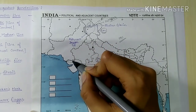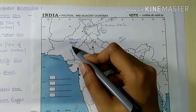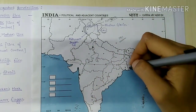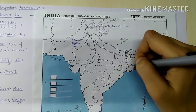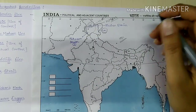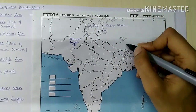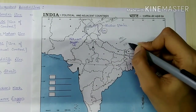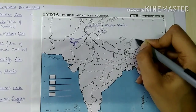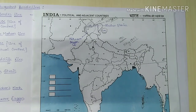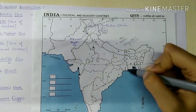Lastly, the Radcliffe Line is the boundary demarcating India and Pakistan. It came into existence on 17th August 1947 after the partition of India. Sir Cyril Radcliffe was the chairman of the border commission, and on his name this line is formed.